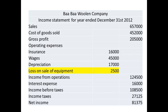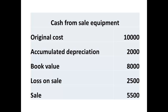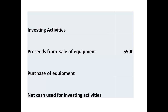We know from the income statement that there was a loss on the sale of the loom of $2,500. We now have sufficient information to determine the cash received for the sale of the loom. The original cost of the loom was $10,000; if the accumulated depreciation was $2,000, the loom had a book value of $8,000. Subtract the loss on sale from this figure, and we know the cash received for the machine was $5,500. This gives us our first figure for the cash received from investing activities.